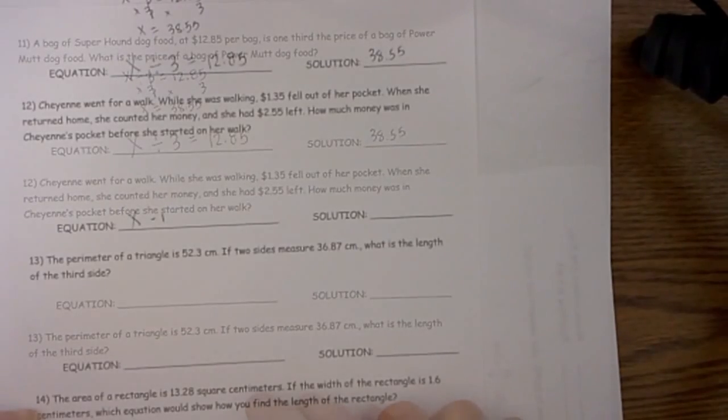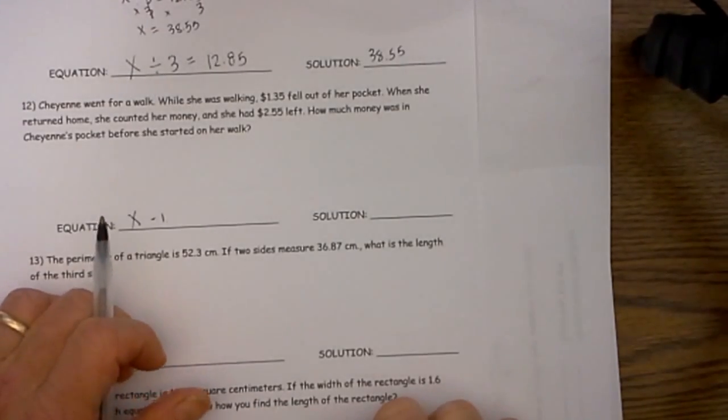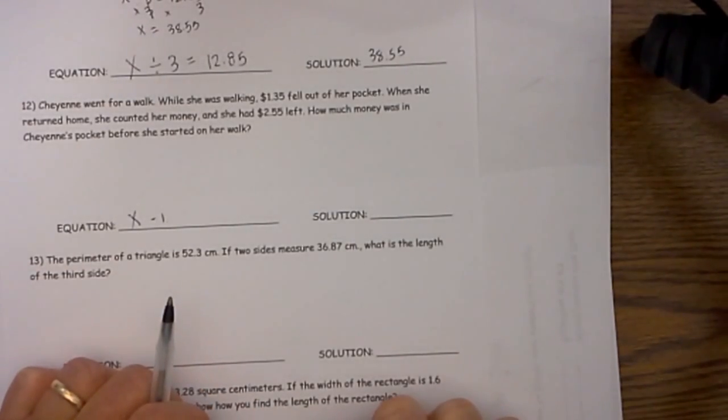Okay let's go ahead and look at number 2. Cheyenne went for a walk. While she was walking $1.35 fell out of her pocket. When she returned home she counted her money and she had $2.55 left. How much money was in Cheyenne's pocket before she started her walk.